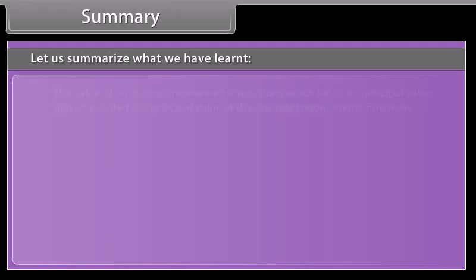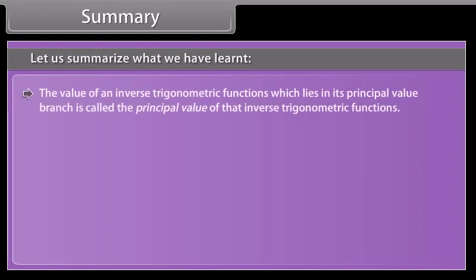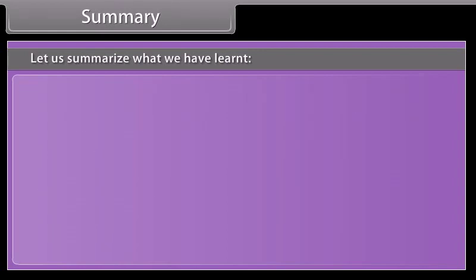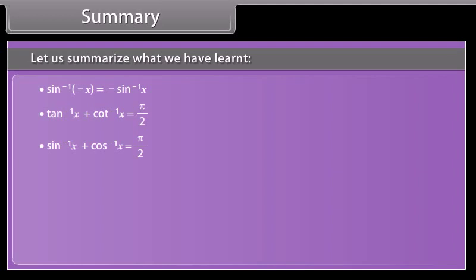Summary: The value of an inverse trigonometric function which lies in its principal value branch is called the principal value of that inverse trigonometric function. For suitable values of domain, we have the formulas covered in this lesson.